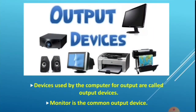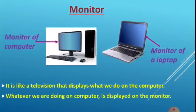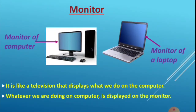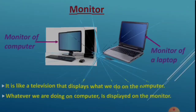Now let's look at output devices. The devices used by the computer for output are called output devices. The monitor is the most common output device. There are two types of monitors: the monitor of a desktop computer and the monitor of a laptop. A monitor looks like a television and displays everything we do on the computer.